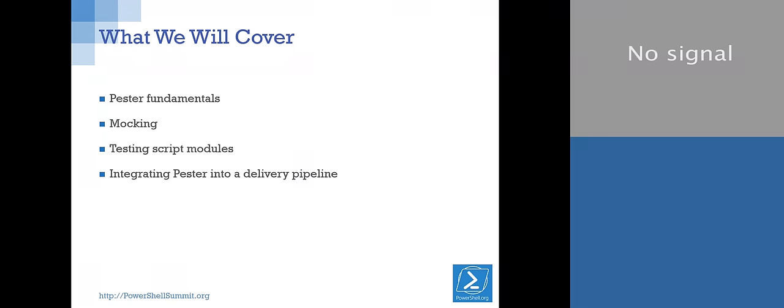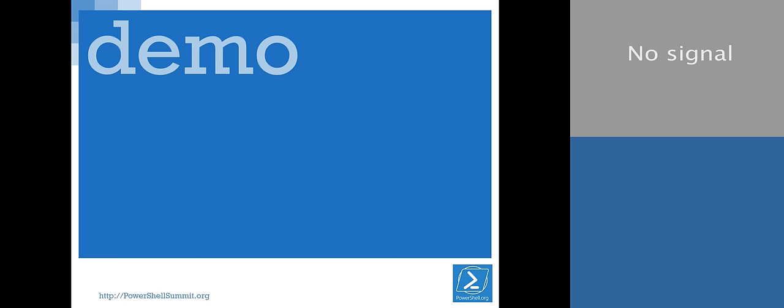So: how to write Pester tests, how to test things in isolation with mocking, how to deal with weird little scope boundary nonsense when you start to introduce script modules, and if we have some time, we'll talk about how to integrate Pester into your delivery pipeline and do some other features that the module has. We'll just kind of see how long things go with questions and whatnot, and with that, I'm done with PowerPoint.